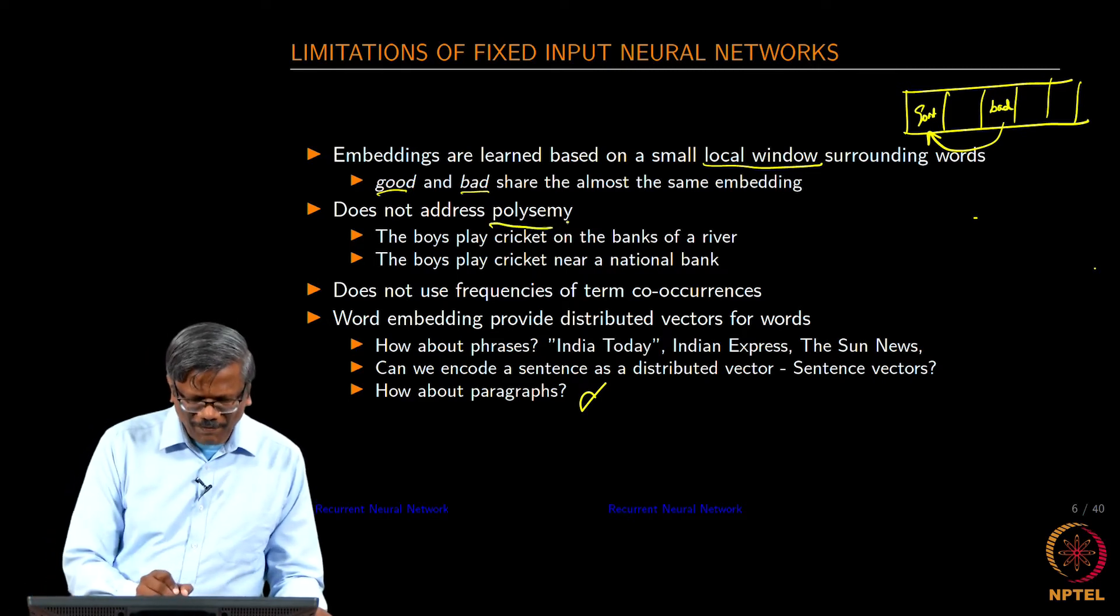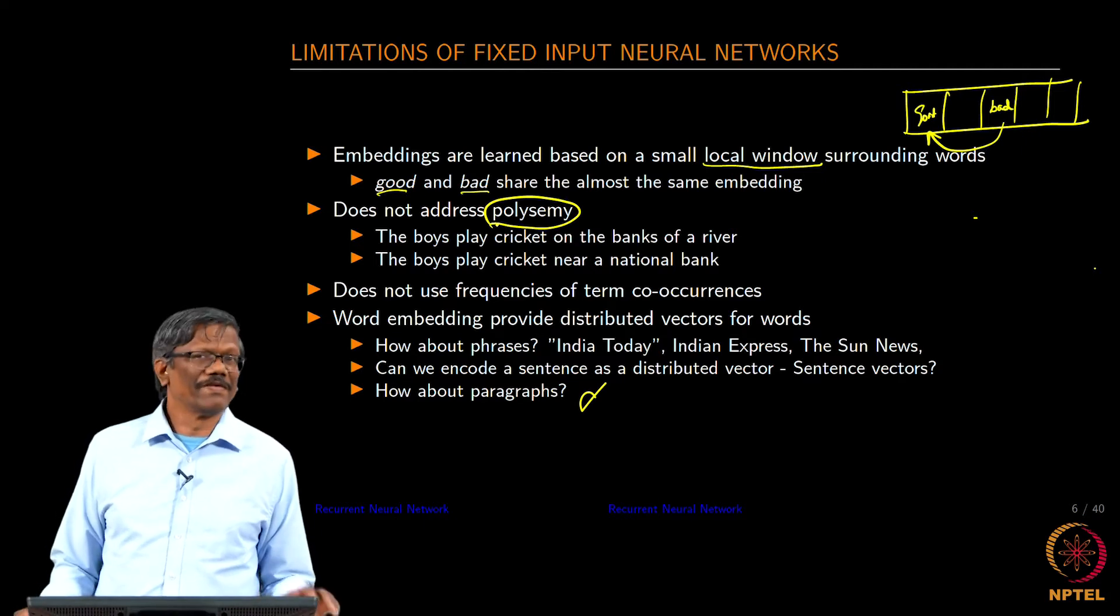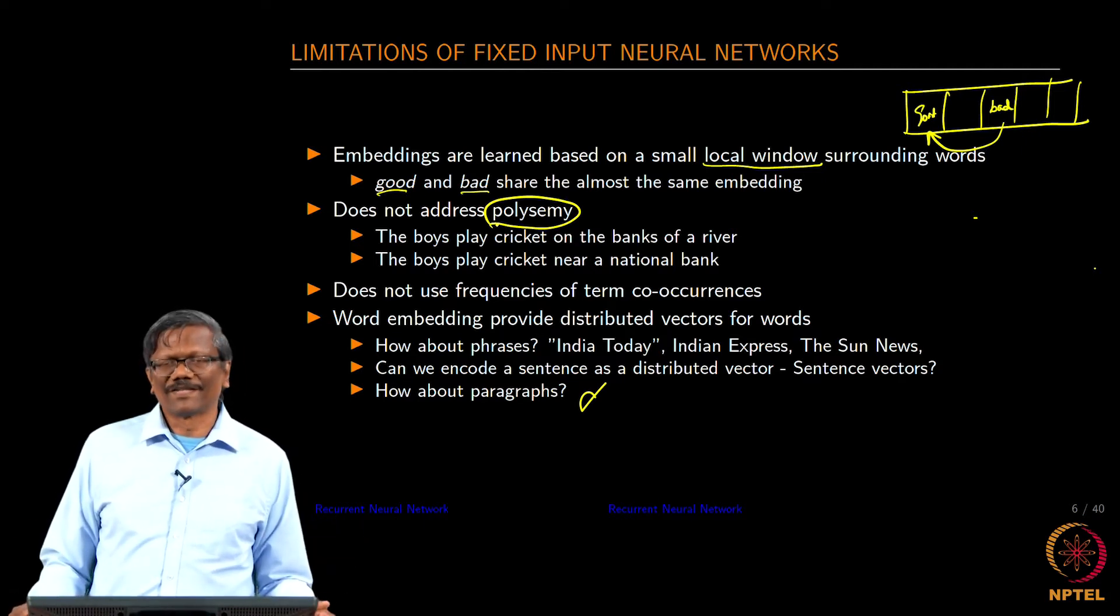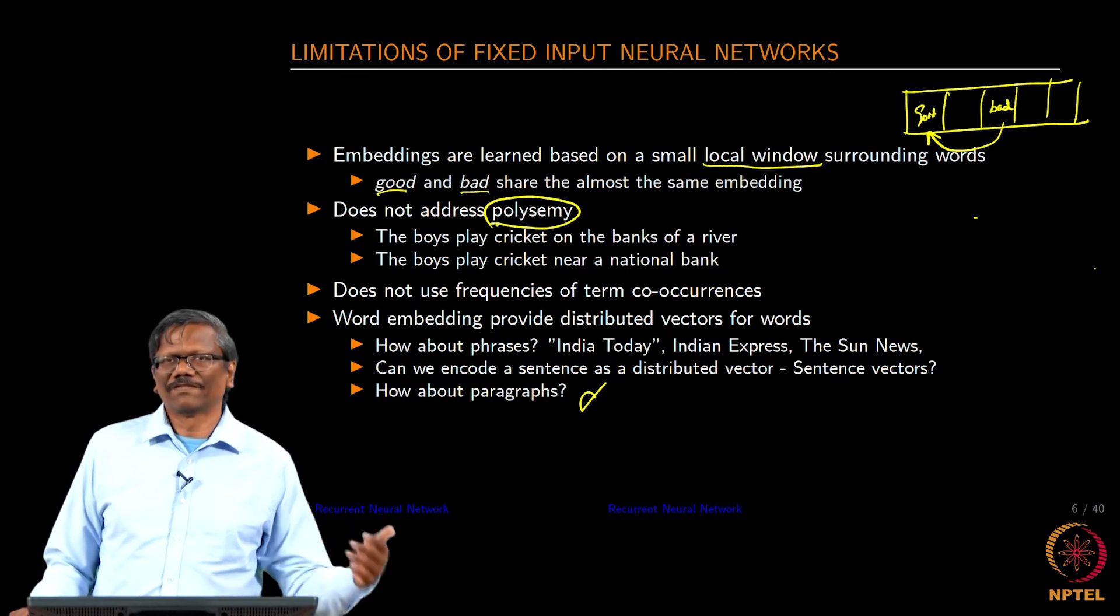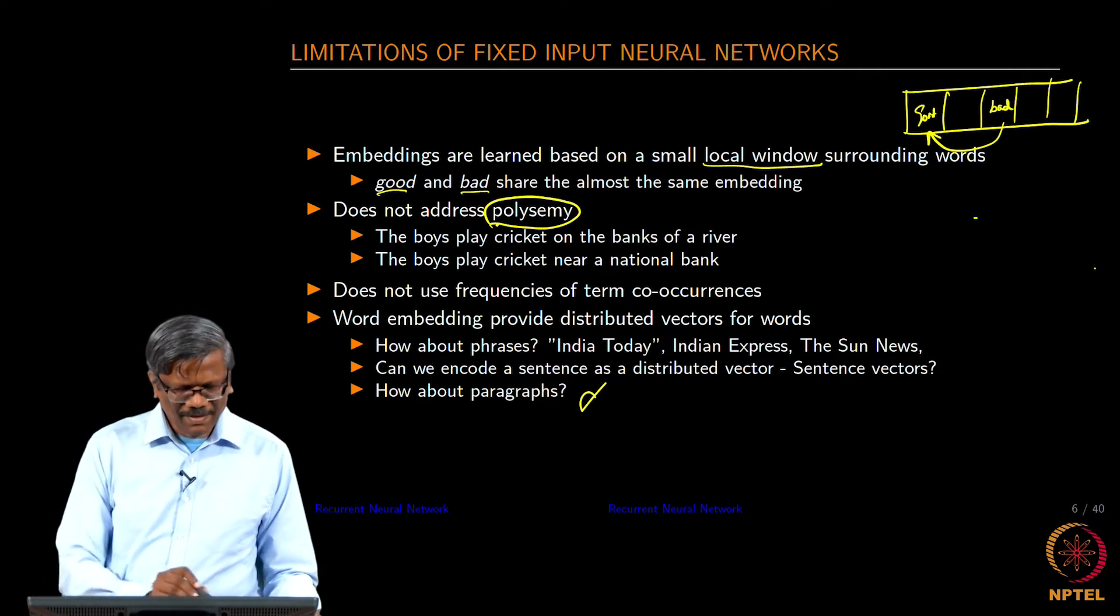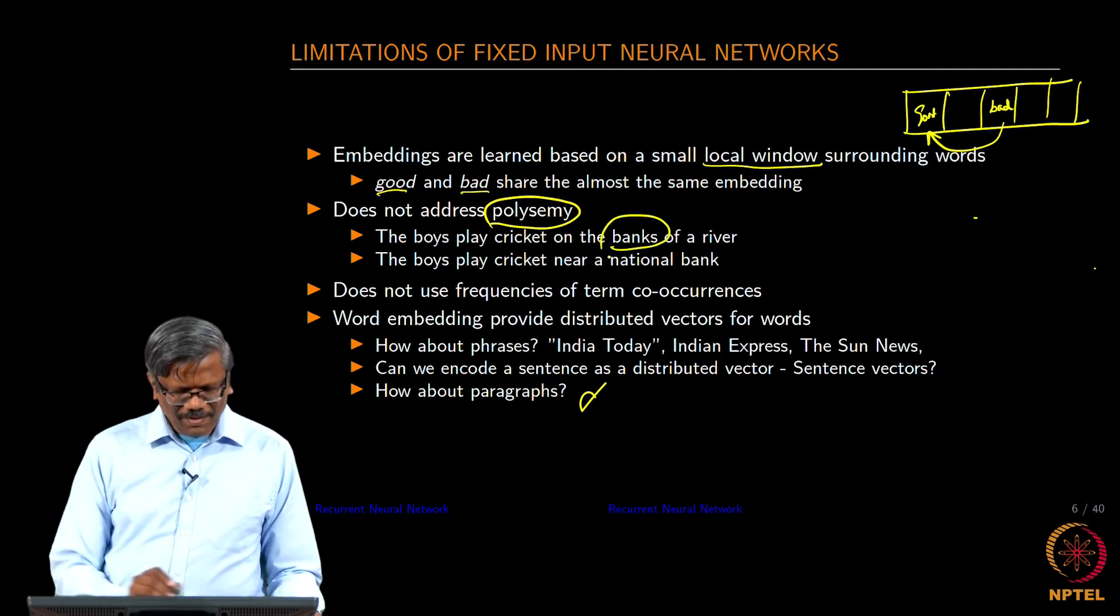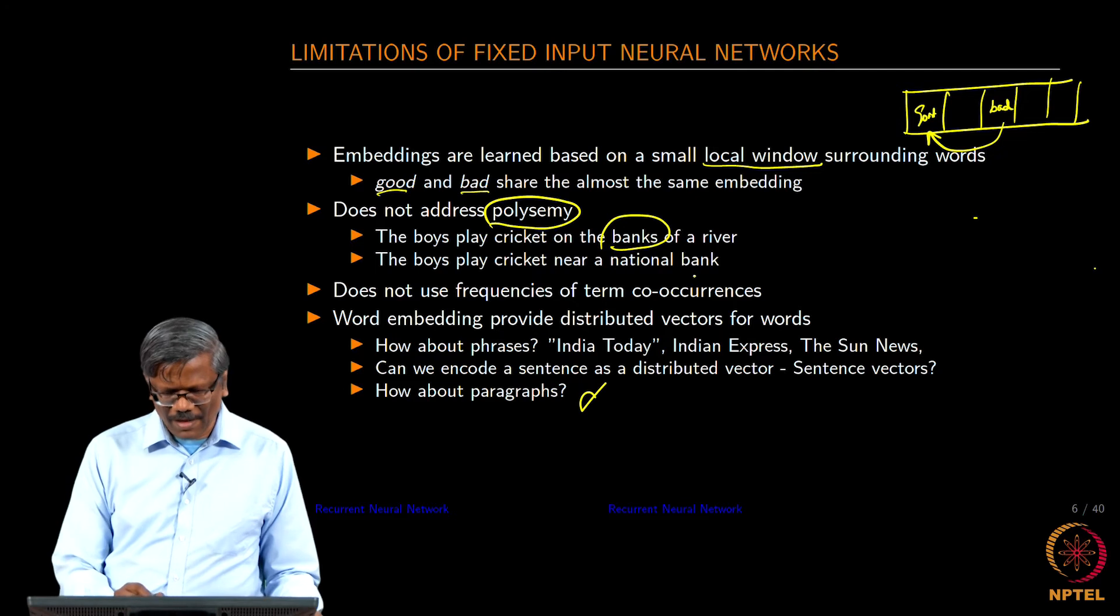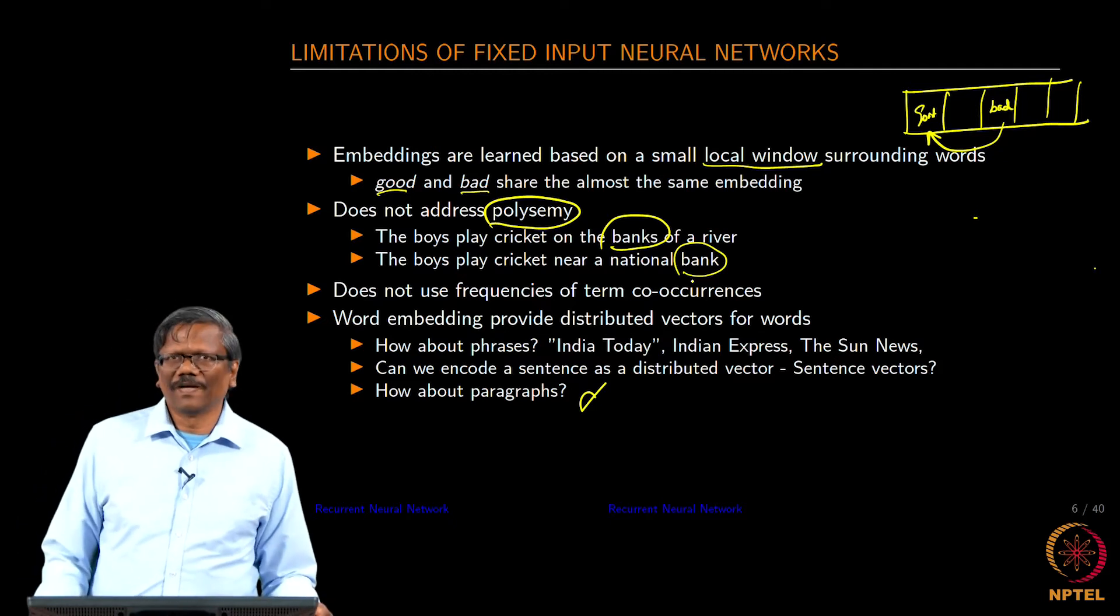This is one of the very important aspects that we wanted to address right from the beginning: polysemy. We were able to capture the similarity in some form. We are not able to address the polysemy even through the neural network that we have studied earlier. To refresh your memory, what polysemy is: the boys play cricket on the banks of a river versus the boys play cricket near a national bank. Same word have a different meaning. How do we really address this?